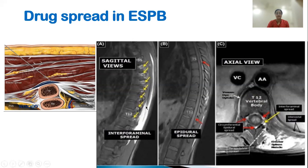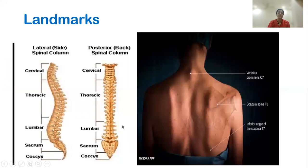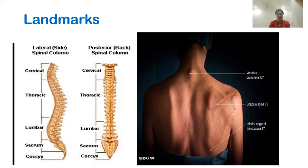Some spread does also occur into the paravertebral space. What are the landmarks for the paravertebral and erector spinae plane block? Both landmarks are the same since you have to hit the transverse process — for the paravertebral block you go beyond the transverse process, and for the erector spinae block you remain just above the transverse process beneath the erector spinae muscle.